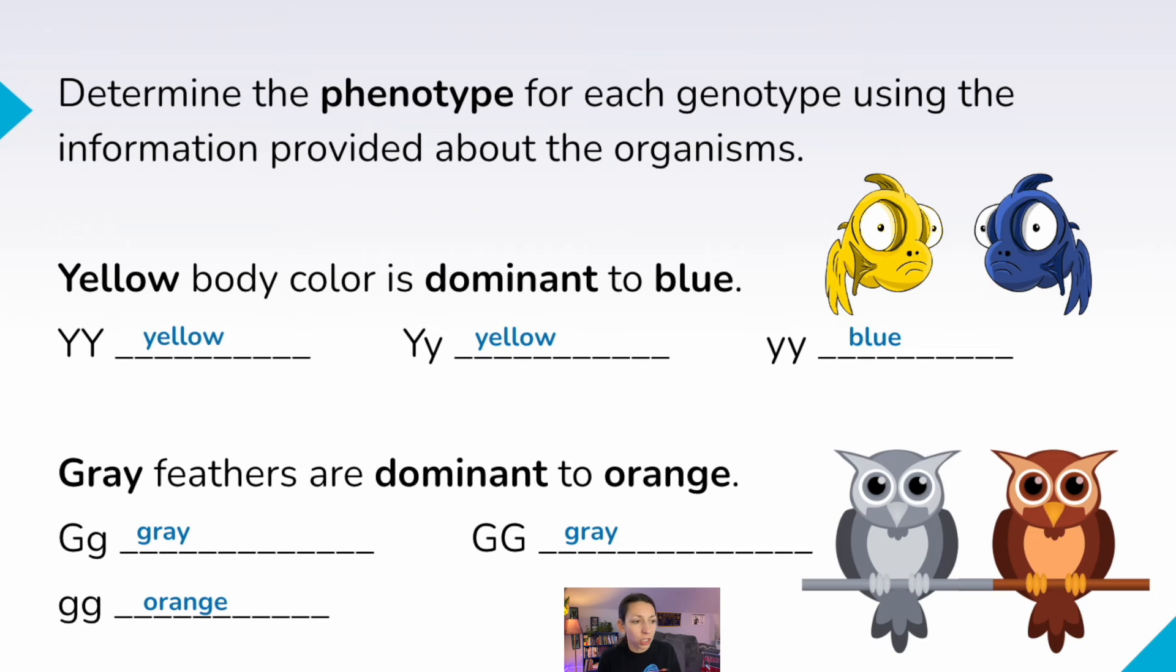Gray feathers are dominant to orange. So big G, little G is going to be gray as well as big G, big G. And then little g, little g is going to be orange.